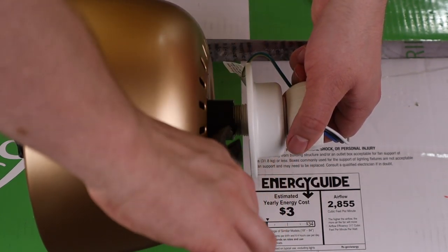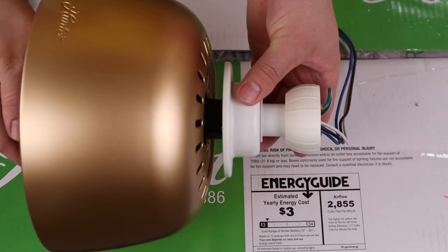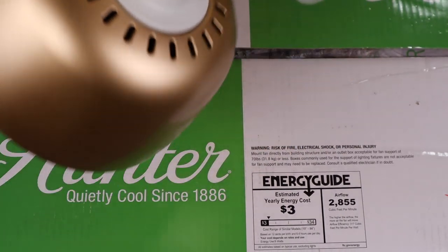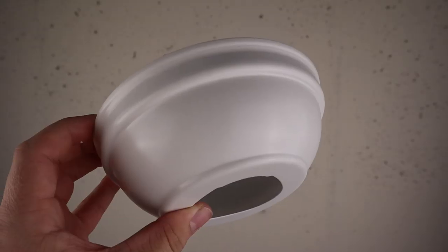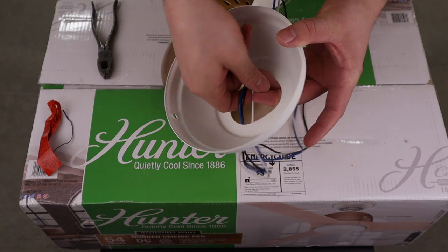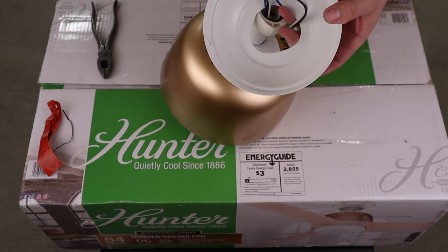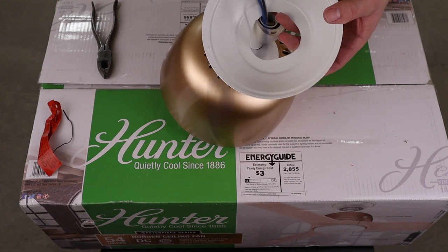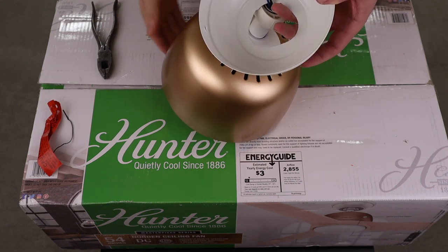Slide the adapter cover down until it rests against the motor housing. Locate the canopy, pass the wiring through the bottom side of the canopy, and guide the canopy over the down rod, allowing it to rest on top of the motor.